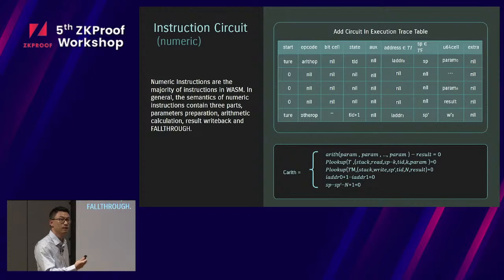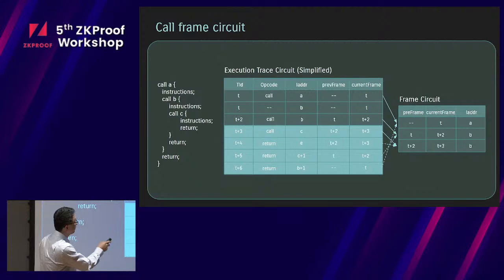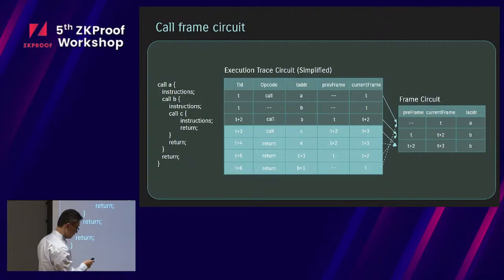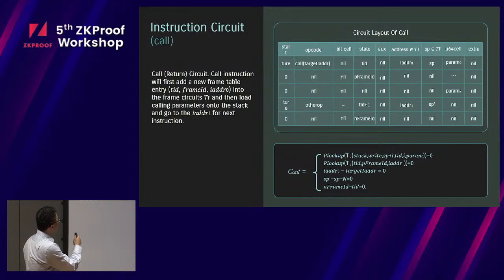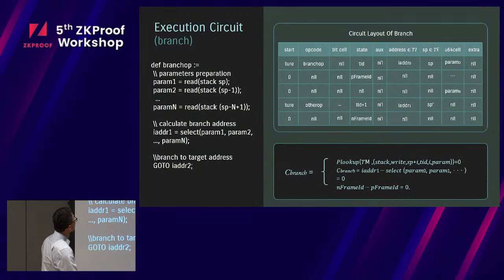The call frame circuits are not very straightforward, but the basic idea is that every time you call instructions, you're calling that into the frame circuit, and every time you do a return, you get the correct return address back. For the call instruction and the return instruction, every time we do a return, we're doing a polynomial lookup from the frame circuit and get the correct return address back. The branch is similar, nothing special. It will not change the call frame.